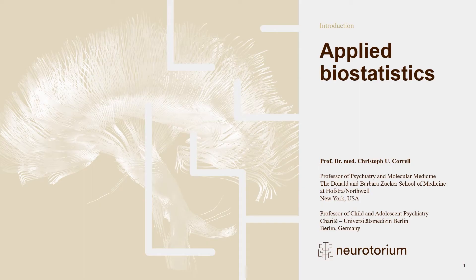Hello everyone. Welcome to this program called Applied Biostatistics. My name is Christoph Correll. I'm a professor of psychiatry and molecular medicine at the Donald and Barbara Zucker School of Medicine at Hofstra Northwell in New York, USA, and I'm also professor of child and adolescent psychiatry at the Charité University Medicine in Berlin, Germany.